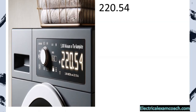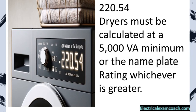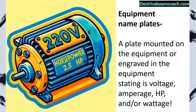Section 220.54 lets us know that dryers must be calculated at a 5,000 VA minimum or the nameplate rating, whichever is greater. A nameplate is a plate mounted on or engraved in the equipment stating its voltage, amperage, horsepower, and/or wattage. As we've learned in previous lessons, we can apply Ohm's Law to find any unknown.